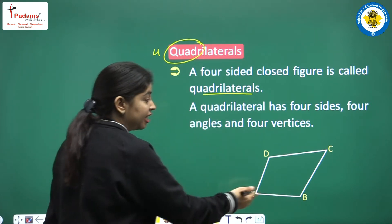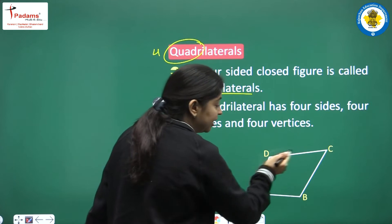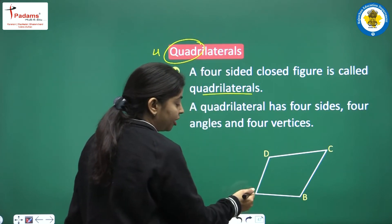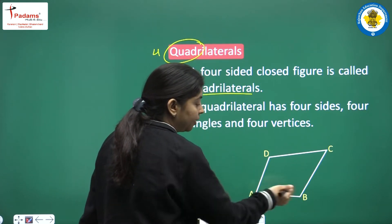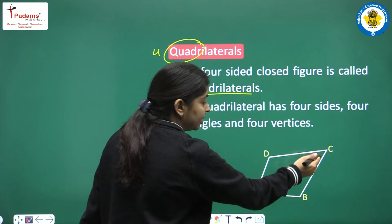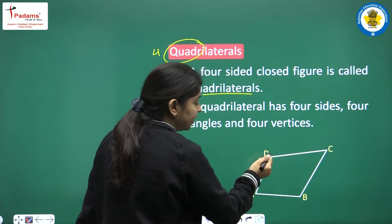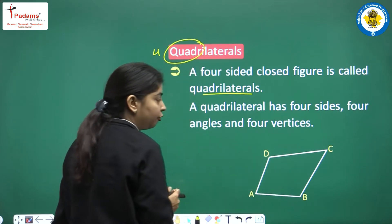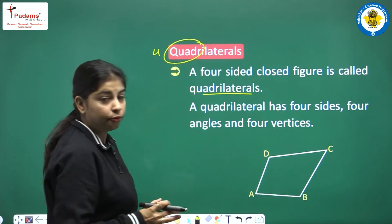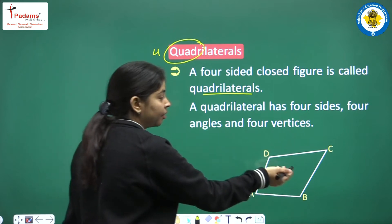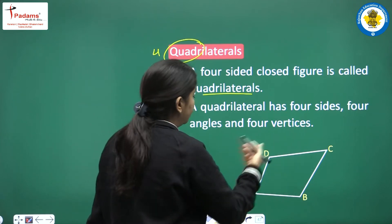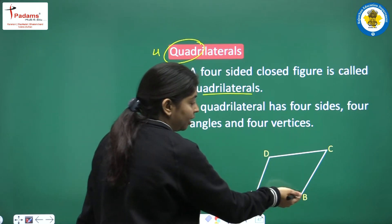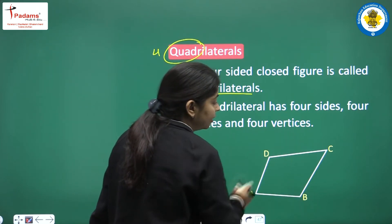For example, in quadrilateral ABCD, one side is AB, then BC, then CD and DA — these are the four sides. The four vertices are A, B, C, D, and the four angles are angle A, angle B, angle C, and angle D.